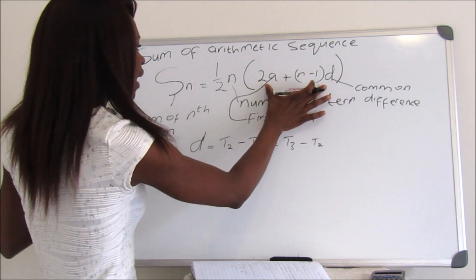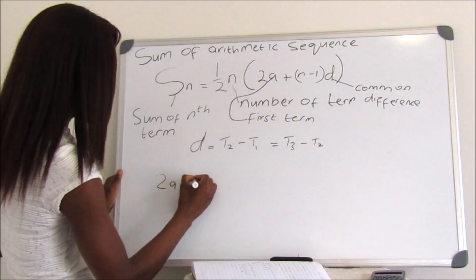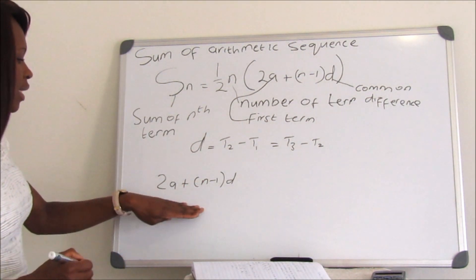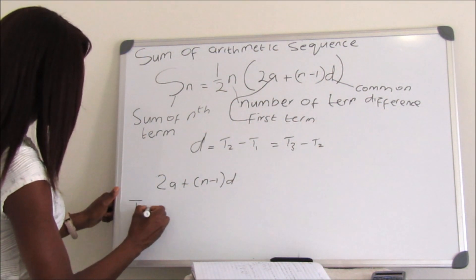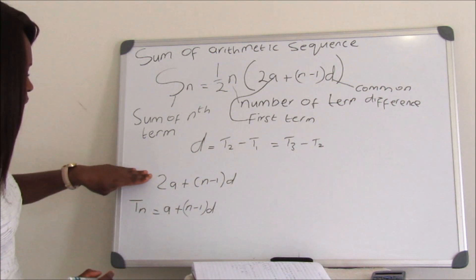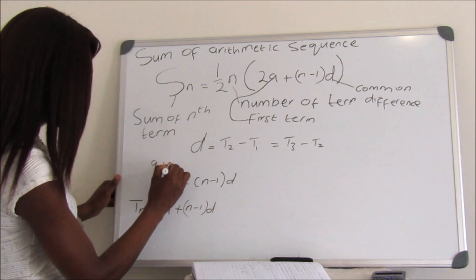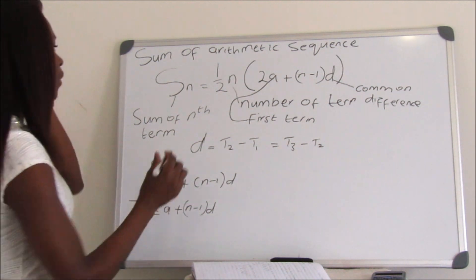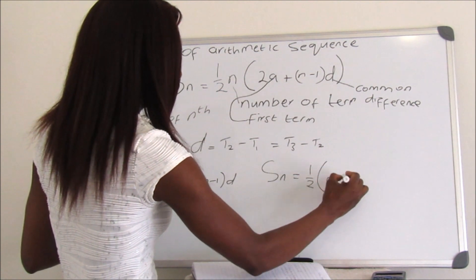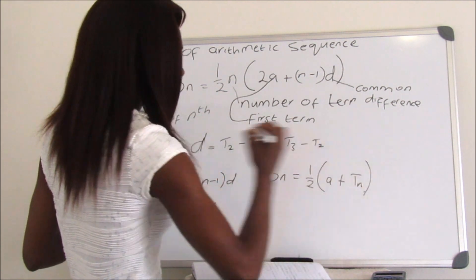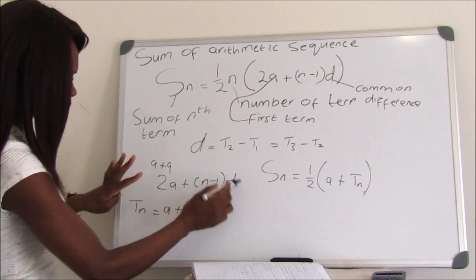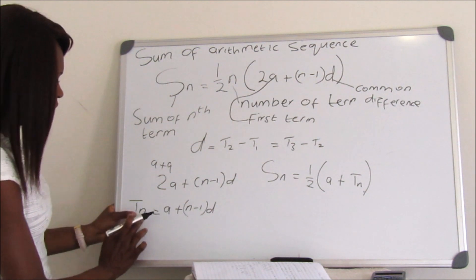From the formula, if we take out the portion 2a + (n−1)d, remember from our previous session the nth term of an arithmetic sequence is tn = a + (n−1)d. So 2a + (n−1)d is just a doubled version: a + a + (n−1)d, which equals a + tn. That means Sn can also be written as Sn = (1/2)n × (a + tn).